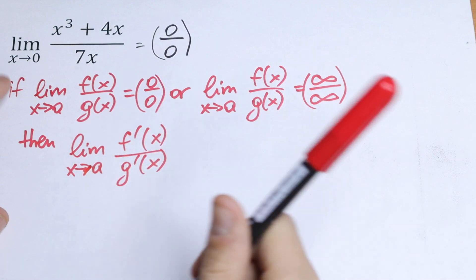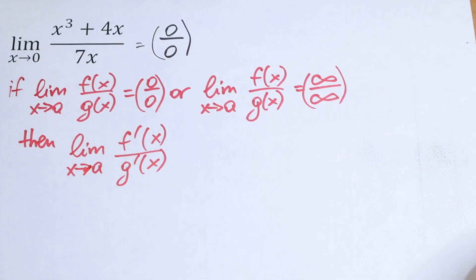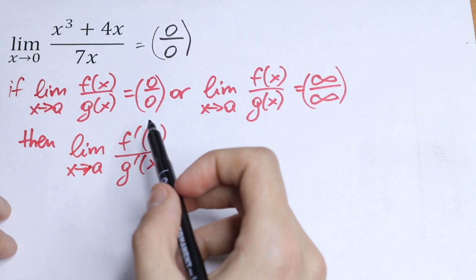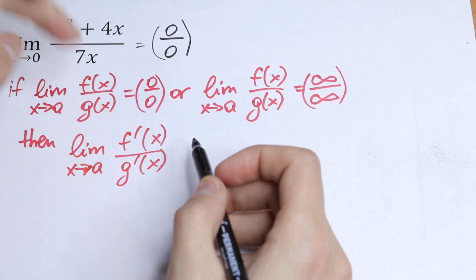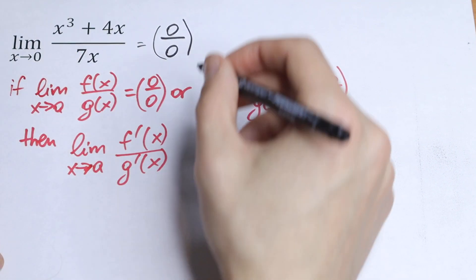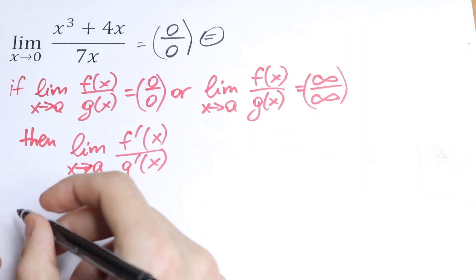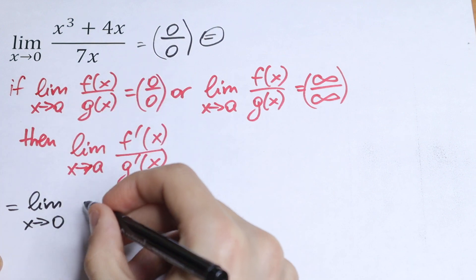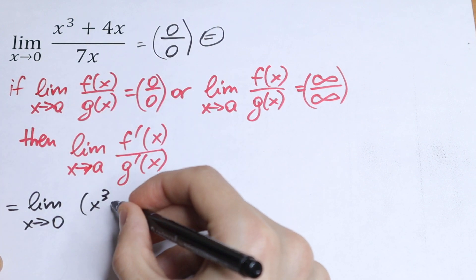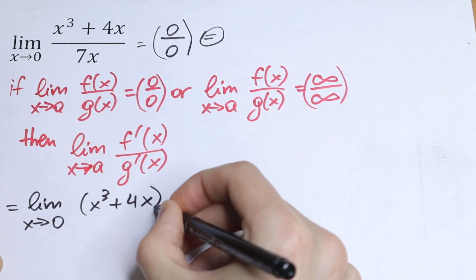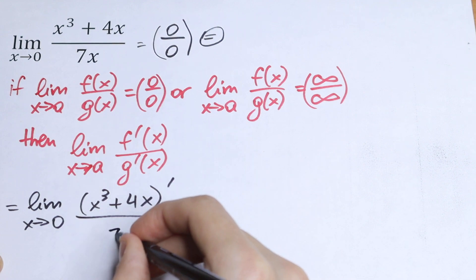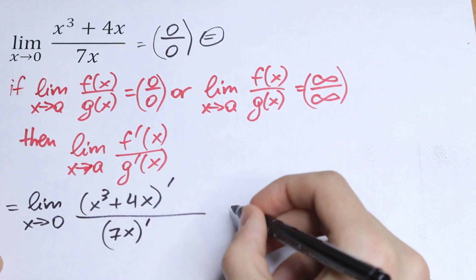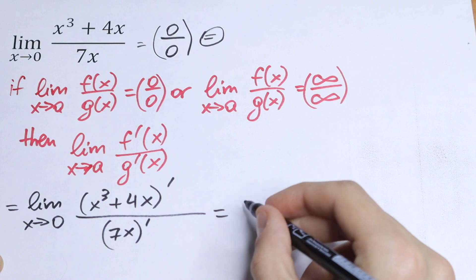Let's use this rule right here and see what will happen. Finding derivative from our numerator and from our denominator. We will have limit as x approaches to 0, and finding derivative from our numerator x cubed plus 4x all over 7x derivative.